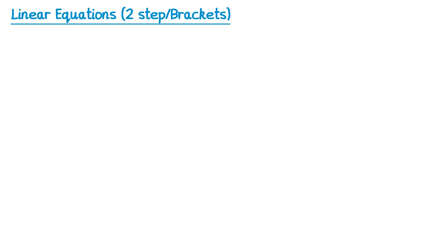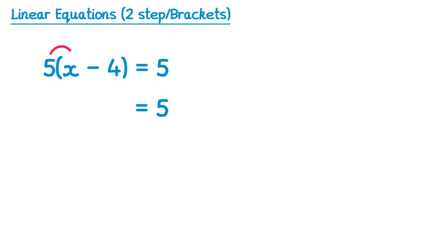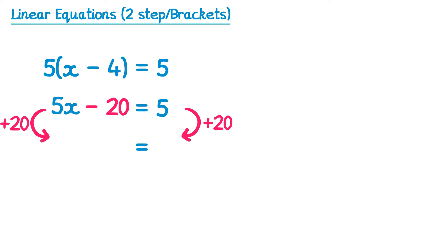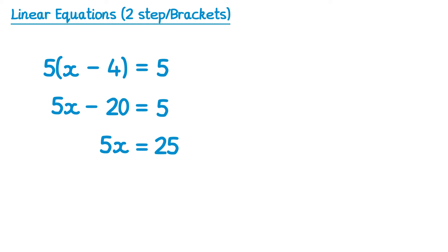Let's try one more example with brackets, and we'll go through both approaches again. First, let's expand out the brackets. We leave the right hand side as equals 5, and on the left hand side we do 5 times x which is 5x, and 5 times negative 4 which is negative 20. The inverse of negative 20 is to add 20 to both sides — on the left we get 5x, and on the right we get 25. Now we divide by 5 on both sides: on the left we get x, and on the right we get 5.